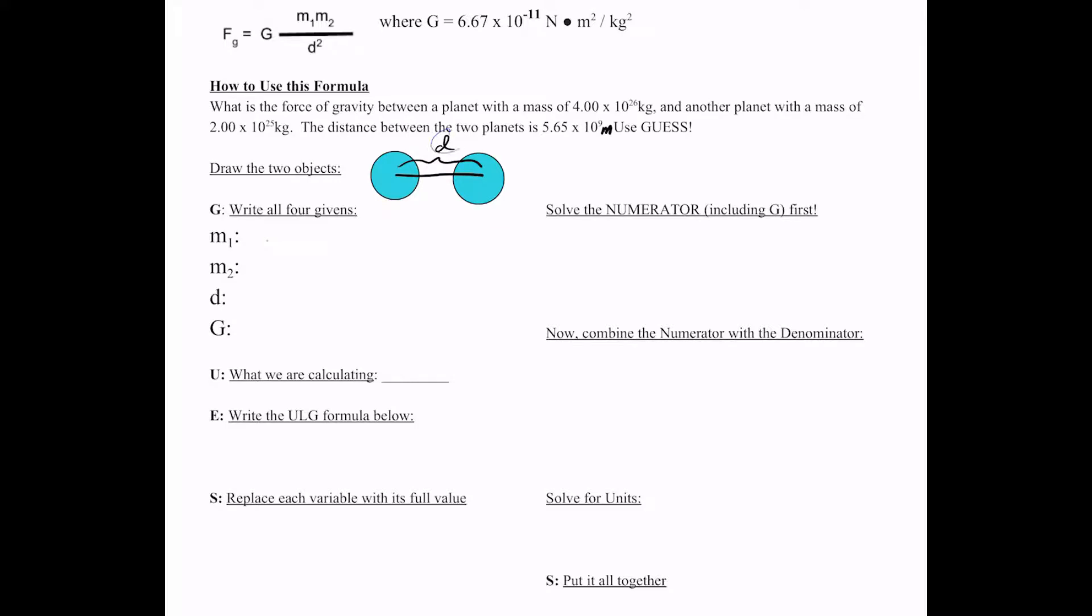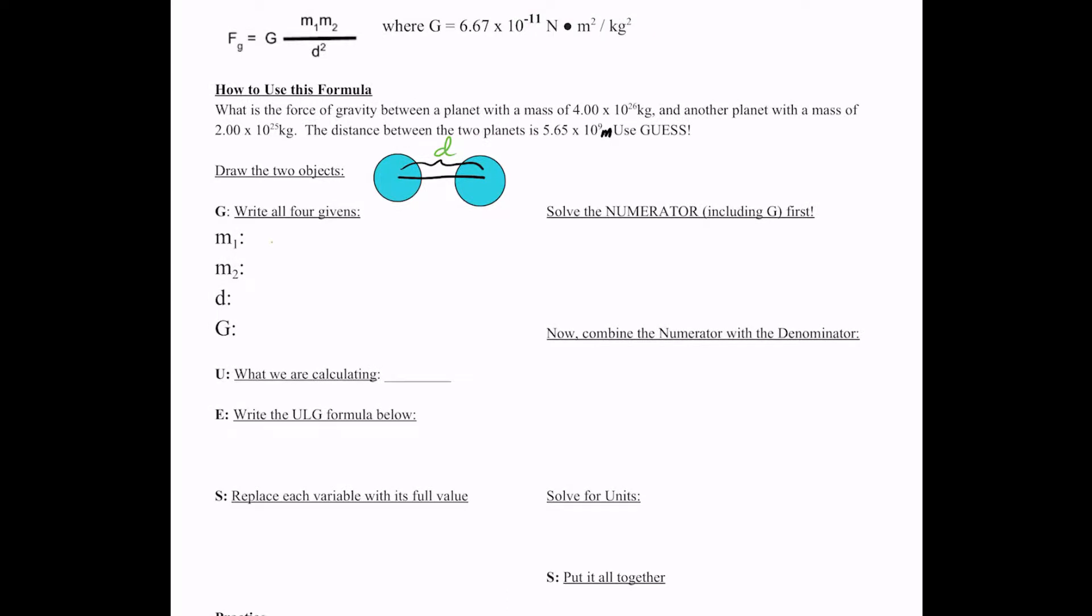So what is mass one? Yeah, 4 times 10 to the 26th. So it's 4 times 10 to the 26th for mass one. What would mass two be then? Yeah, 2 times 10 to the 25th kilograms.